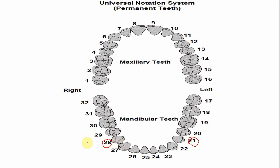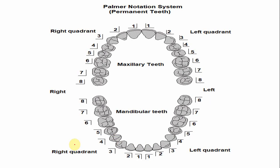The number of the mandibular first premolar in the Palmer notation system is four, whether it is the right or left mandibular premolar. The only difference is the symbol: one symbol indicates the mandibular left quadrant, and the other symbol indicates the mandibular right quadrant.